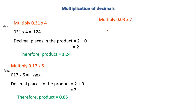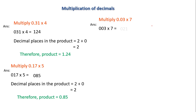Let's do one more problem: multiply 0.03 into 7. Without considering the decimal point, I write this as 003 into 7. Now finding the product: 7 into 3 is 21, write 1 carry 2; 7 into 0 is 0, plus 2 is 2; 7 into 0 is 0. So I got 021.